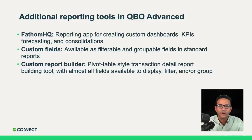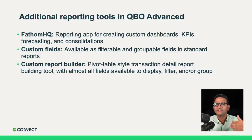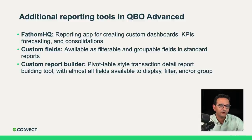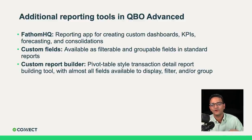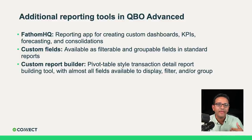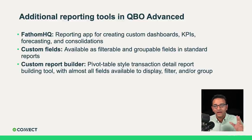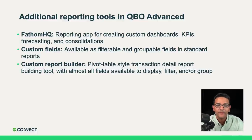If your business is growing fast and the built-in reports don't give you enough information, consider upgrading to QuickBooks Online Advanced, which contains three essential reporting tools. Fathom HQ is a third-party reporting app — best in class — that allows you to create custom dashboards, KPIs (key performance indicators), forecasting, and consolidation. If you have multiple businesses in QuickBooks Online and want to consolidate them to analyze everything together, you can do that with Fathom HQ, included with your Advanced subscription.